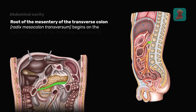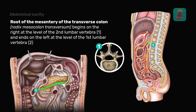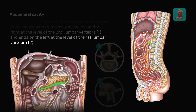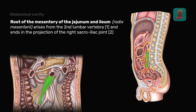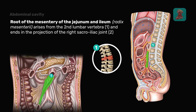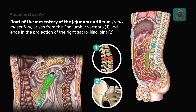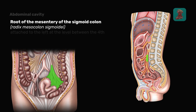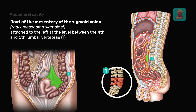The root of the mesentery of the transverse colon begins on the right at the level of the second lumbar vertebra and ends to the left at the level of the first lumbar vertebra. The root of the mesentery of the jejunum and ileum arises from the second lumbar vertebra and ends in the projection of the right sacroiliac joint. The root of the mesentery of the sigmoid colon is attached to the left at the level between the fourth and fifth lumbar vertebrae.